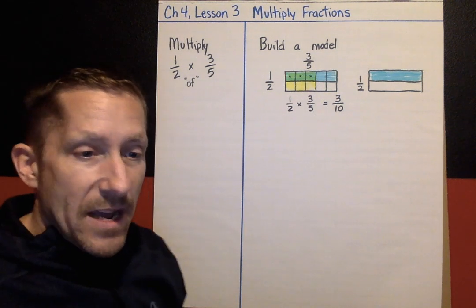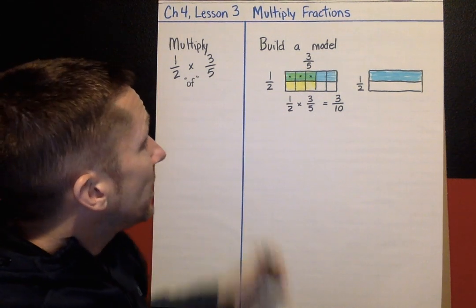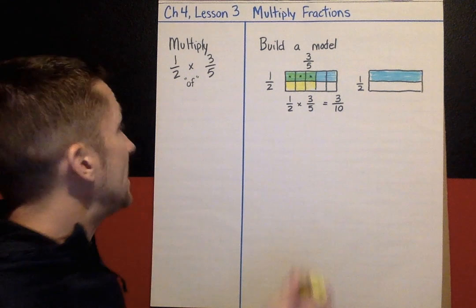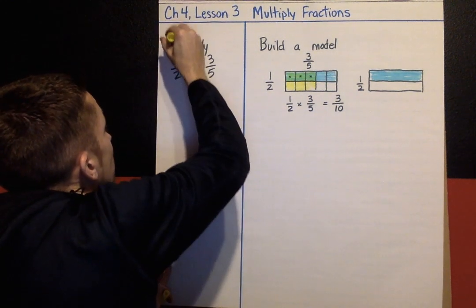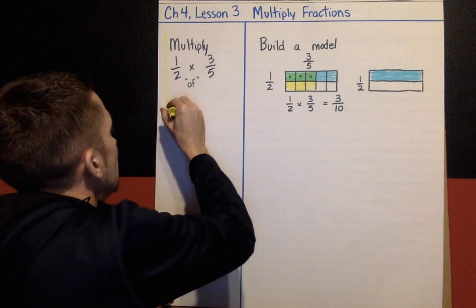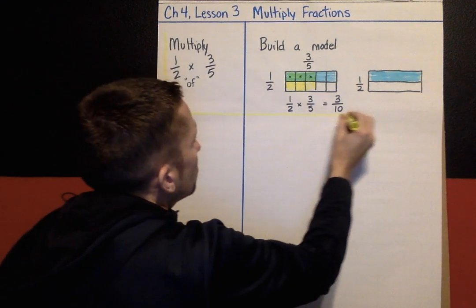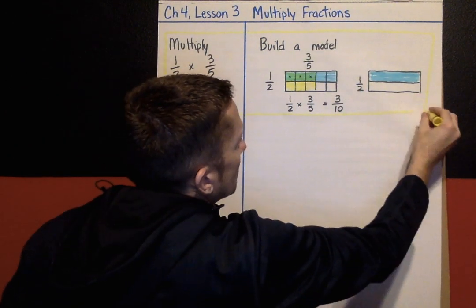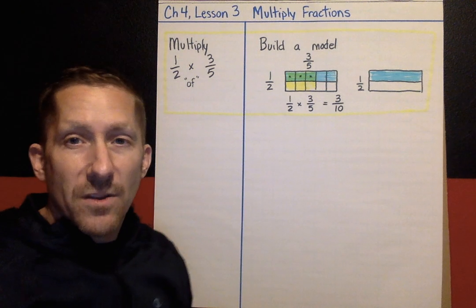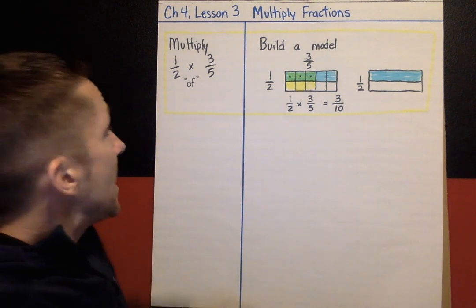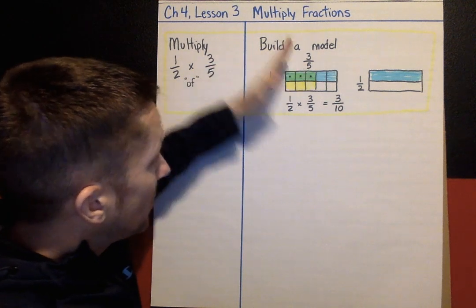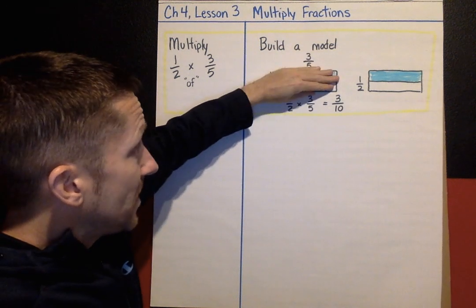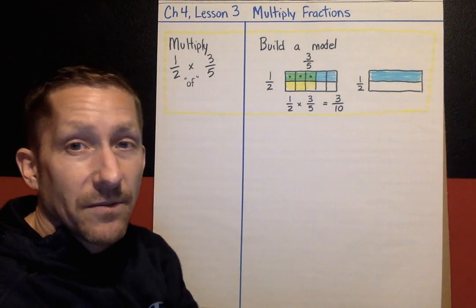So that is one way to multiply fractions — build a model. I'm going to put a rectangle around this strategy. This is one strategy you can use today: build a model. You're going to model one fraction with columns, model the other fraction in rows, put them on top of each other, and the double-shaded brownies give you your answer.